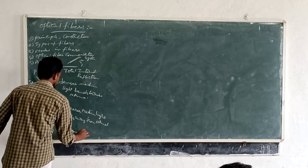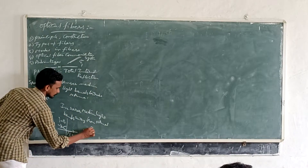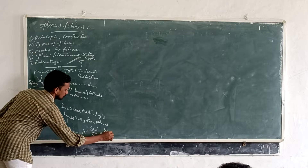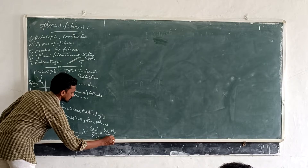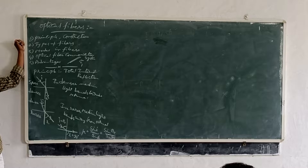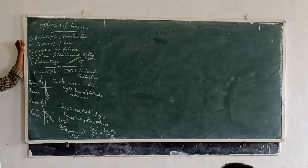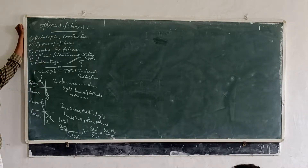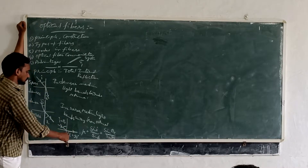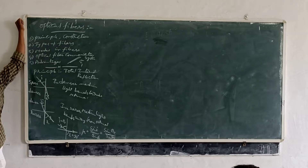The relationship is: mu1 = sin(theta_c) / sin(90), that is sin(theta_c). So theta_c is the critical angle where the angle of refraction is 90 degrees.